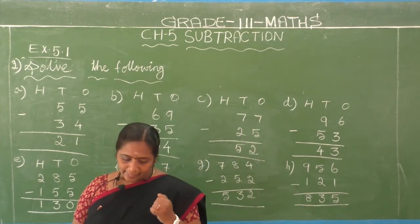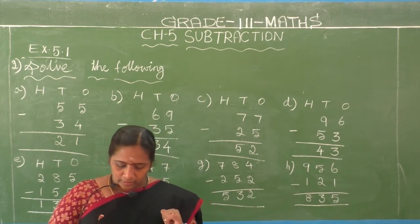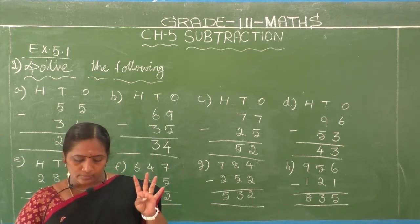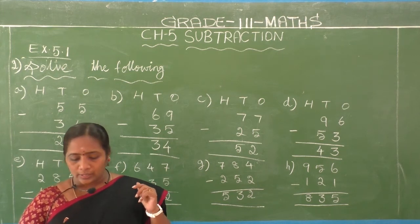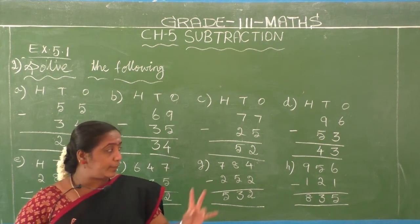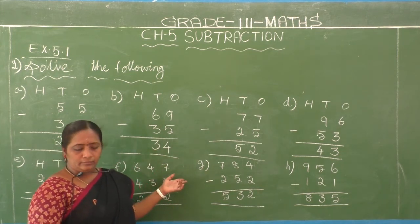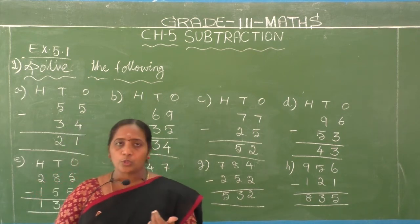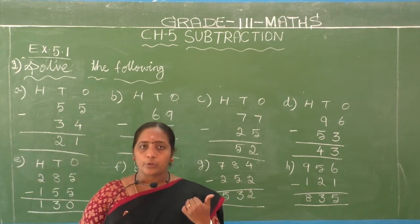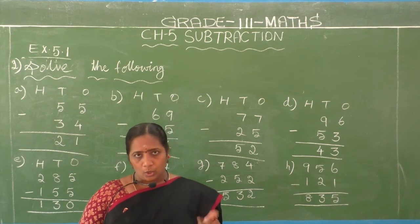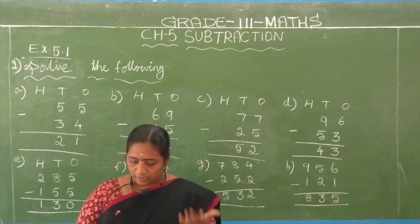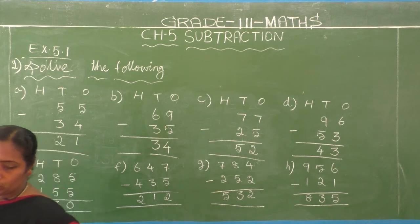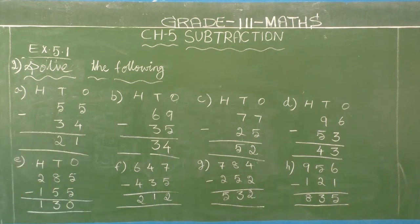In the second section they gave sums in 4 rows. I completed 2 rows here. The remaining 2 rows are your homework. Copy these sums in your book. Now we go to the third section.